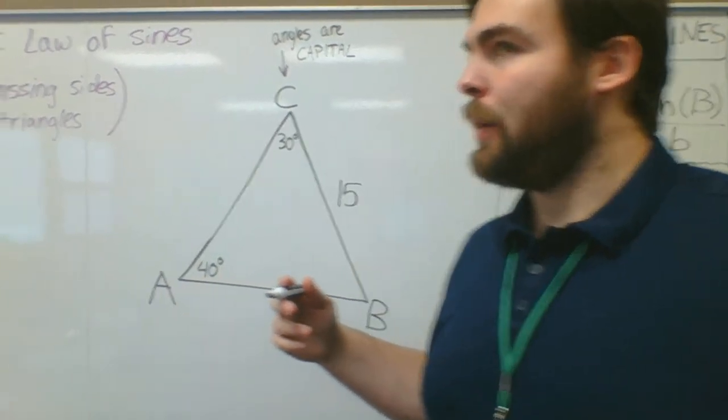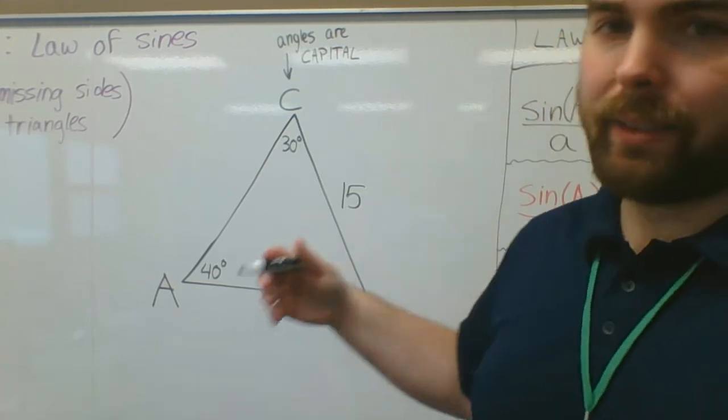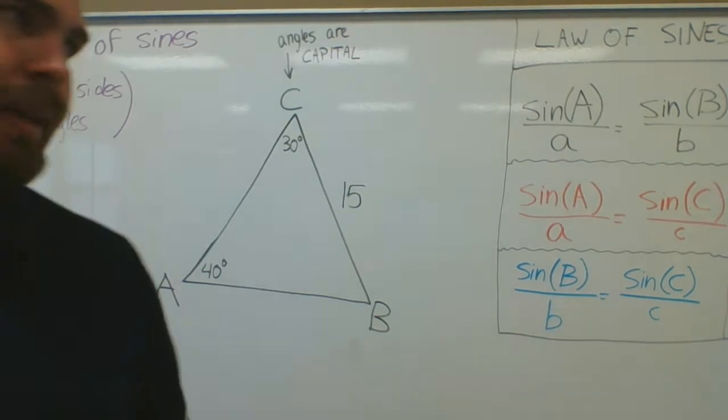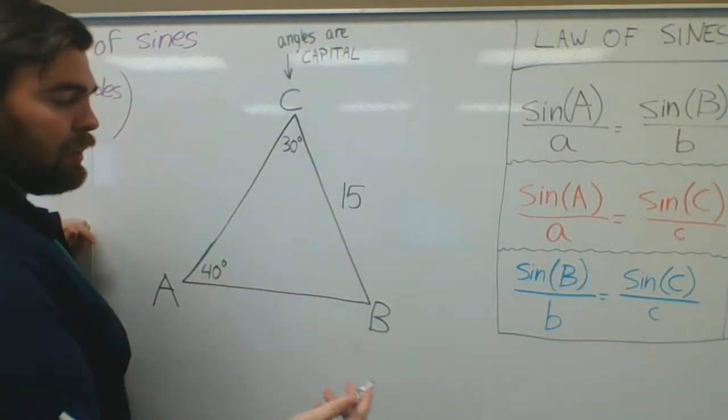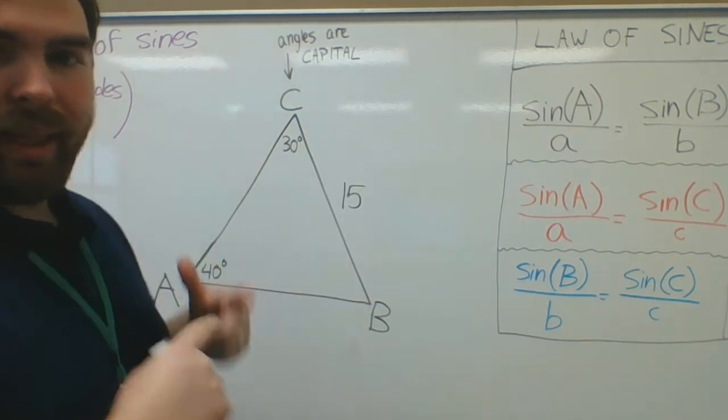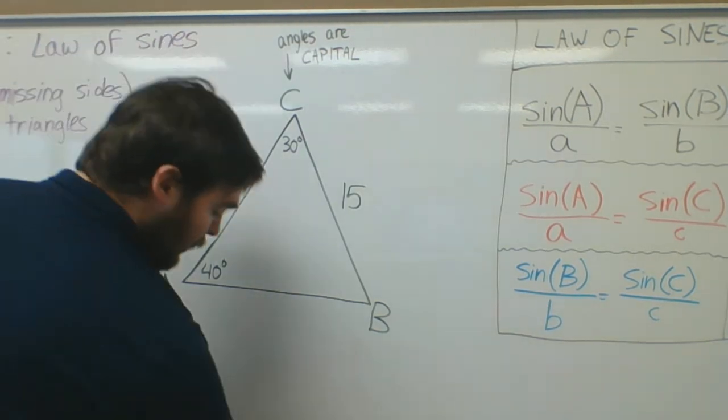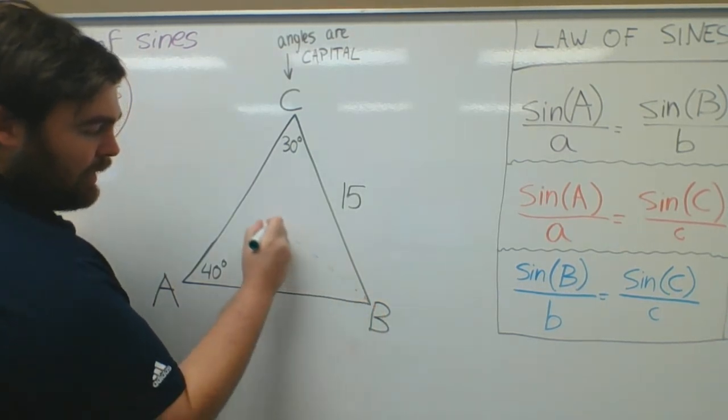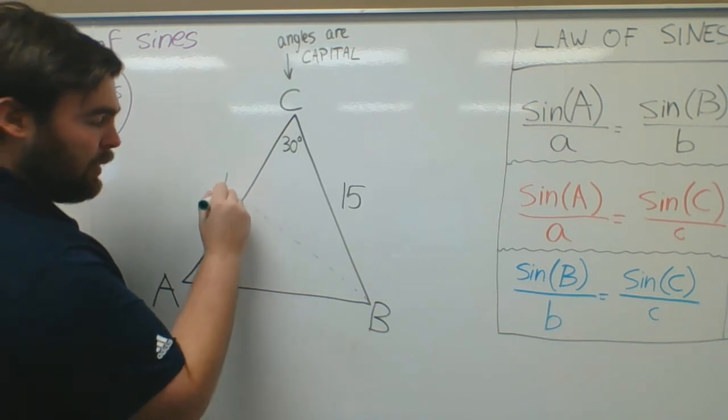The other thing I want to talk about is how you label the sides. Sometimes they label it different online than how it is. How is it labeled? The angle and the side across from it are going to be related. This angle is related to this side. So this is capital B, I'm going to call this lowercase b.